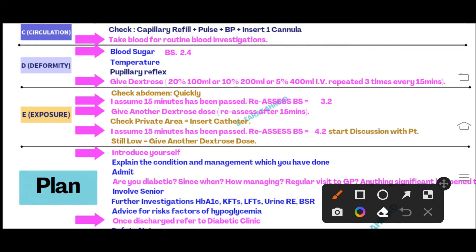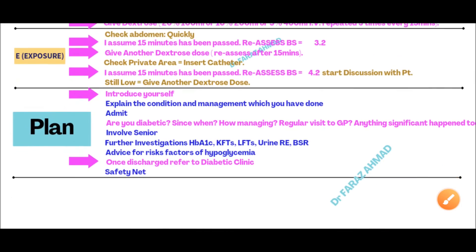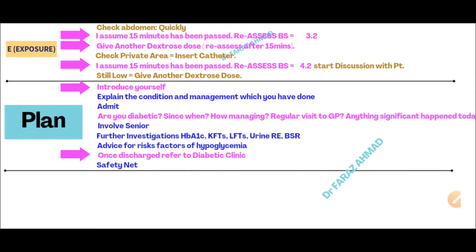After the second dose of dextrose, insert a urinary catheter. Then say: 'Examiner, assume 15 minutes have passed — I am going to reassess the blood sugar.' The examiner may say it is now 4.2 and that the patient is starting to respond, becoming drowsy and asking 'Where am I? Who are you?' If the reading is still low, such as 3.8, give another 20% dextrose. The examiner will normalize the blood sugar after two doses.